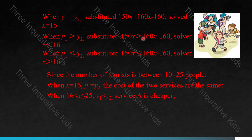Since the number of tourists is between 10 and 25: when X equals 16, Y1 equals Y2 and both services cost the same. When X is greater than 16 but less than or equal to 25, Y1 is less than Y2, so service A would be cheaper. When X is greater than or equal to 10 and less than 16, Y1 is greater than Y2, which means service B would be cheaper.